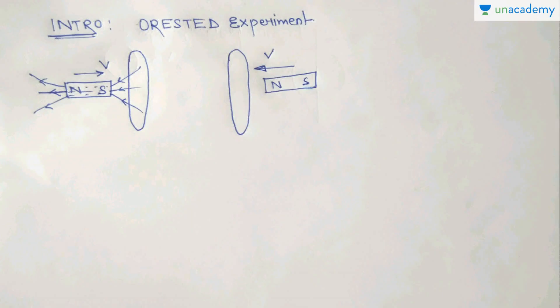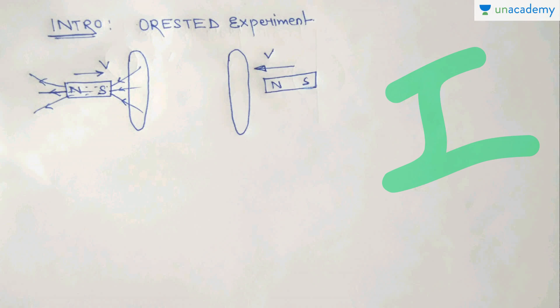Now, if we talk about the definition of Electromagnetic Induction, we have seen in the previous lecture that Electromagnetic Induction is nothing but the generation of electric current due to the change in magnetic flux through a closed loop or surface. The idea of Electromagnetic Induction begins from the Oersted Experiment, which you have learned in the Magnetic Field chapter.